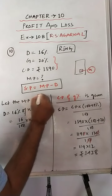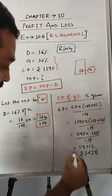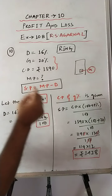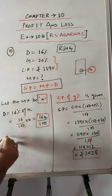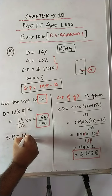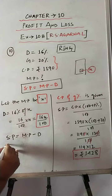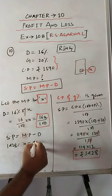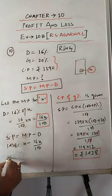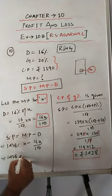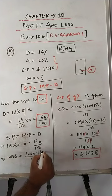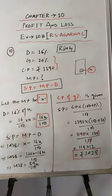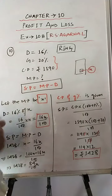We can now use all these values in the formula SP equals MP minus discount. So 1428 equals X minus 16X by 100. Taking LCM of 100, we get 1428 equals 100X minus 16X over 100, which gives 1428 equals 84X by 100. To get the value of X, we transpose: X equals 1428 into 100 by 84.